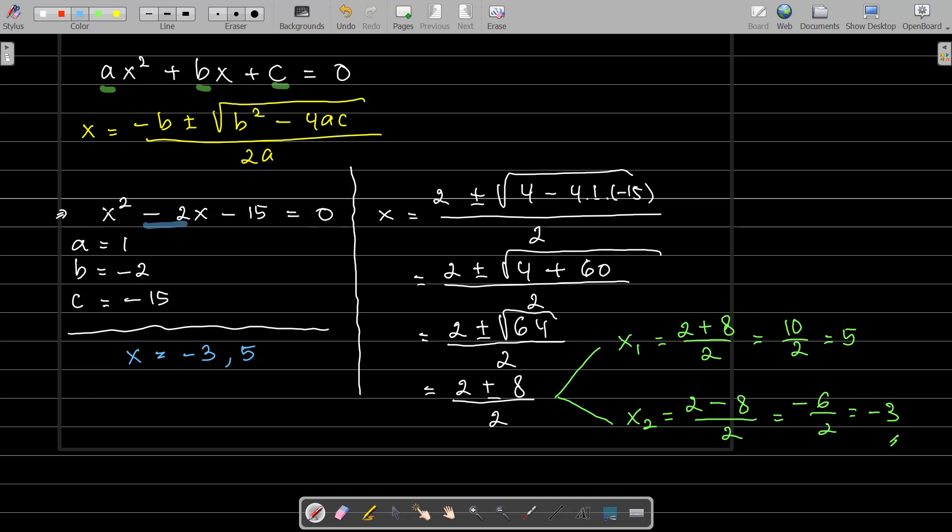So for example, when I put x with -3, I will get (-3)² - 2(-3) - 15. -3 squared is 9, minus 2 times -3 is +6, and -15. 9 + 6 is 15, minus 15 is 0. Correct.